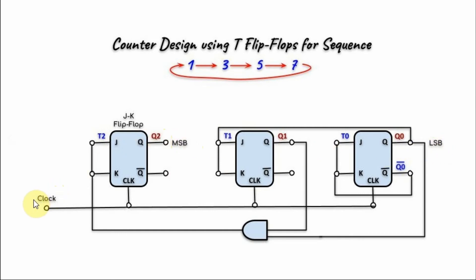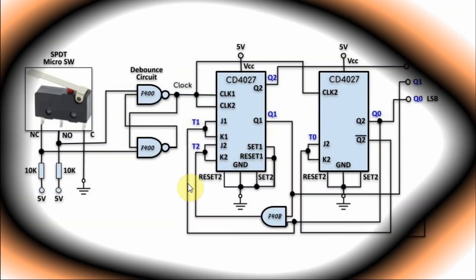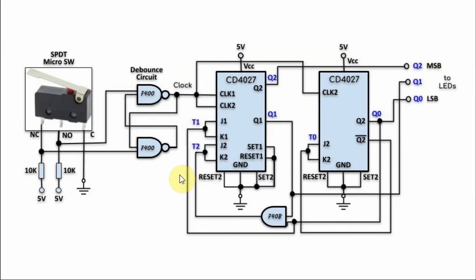When the clock is applied, the output should count 1, 3, 5, 7, and then repeat. This is the circuit diagram of the implemented counter.